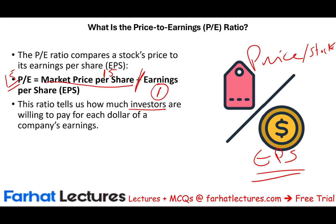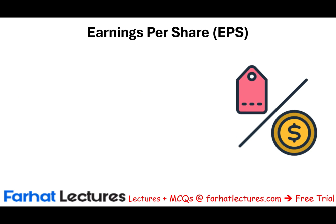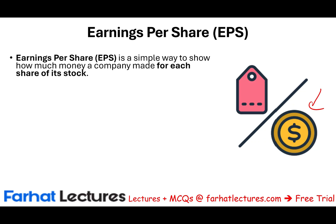In this formula, the market price is easy to find for publicly traded companies — it's known. As for earnings per share (EPS), it's a simple way to show how much money a company made for each share of stock. You take the net income — revenues minus expenses — and divide it by the number of shares. For example, $1,000 in net income divided by 1,000 shares equals $1 EPS.